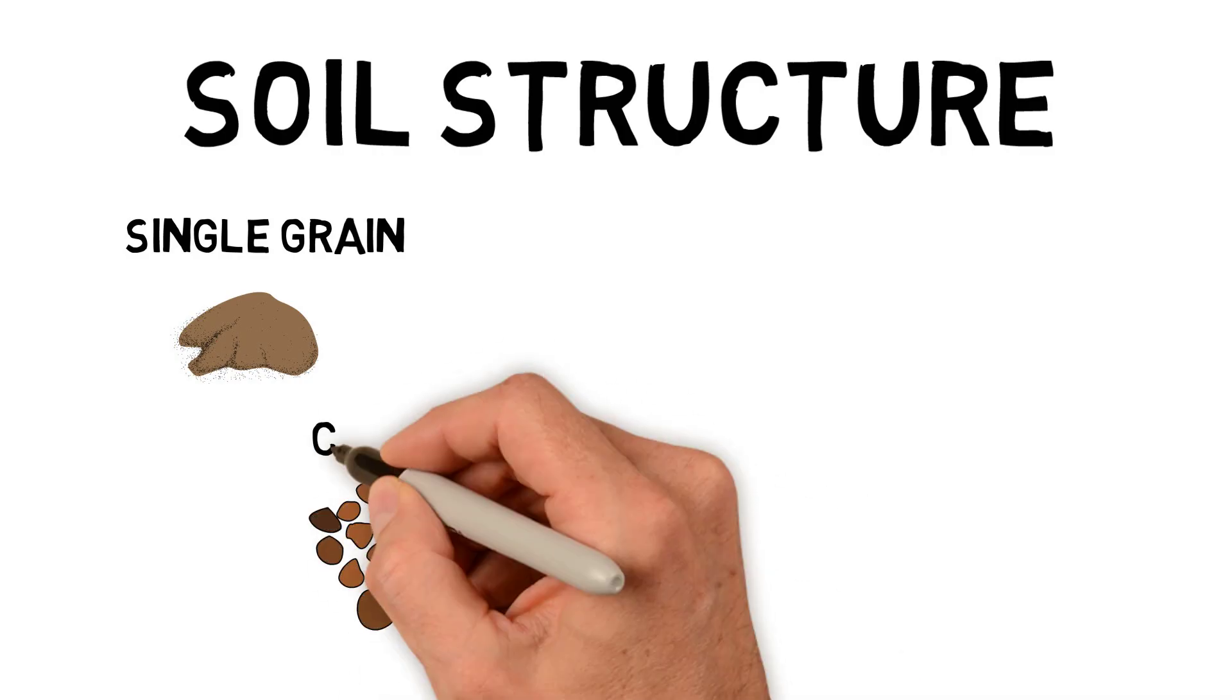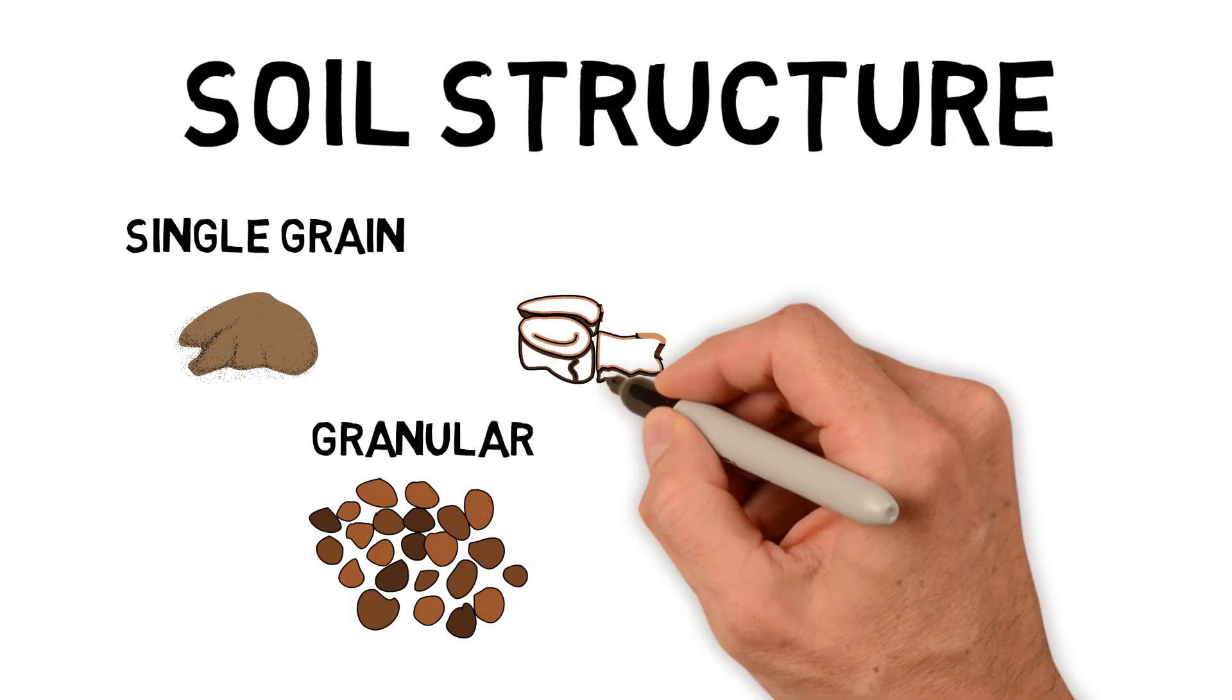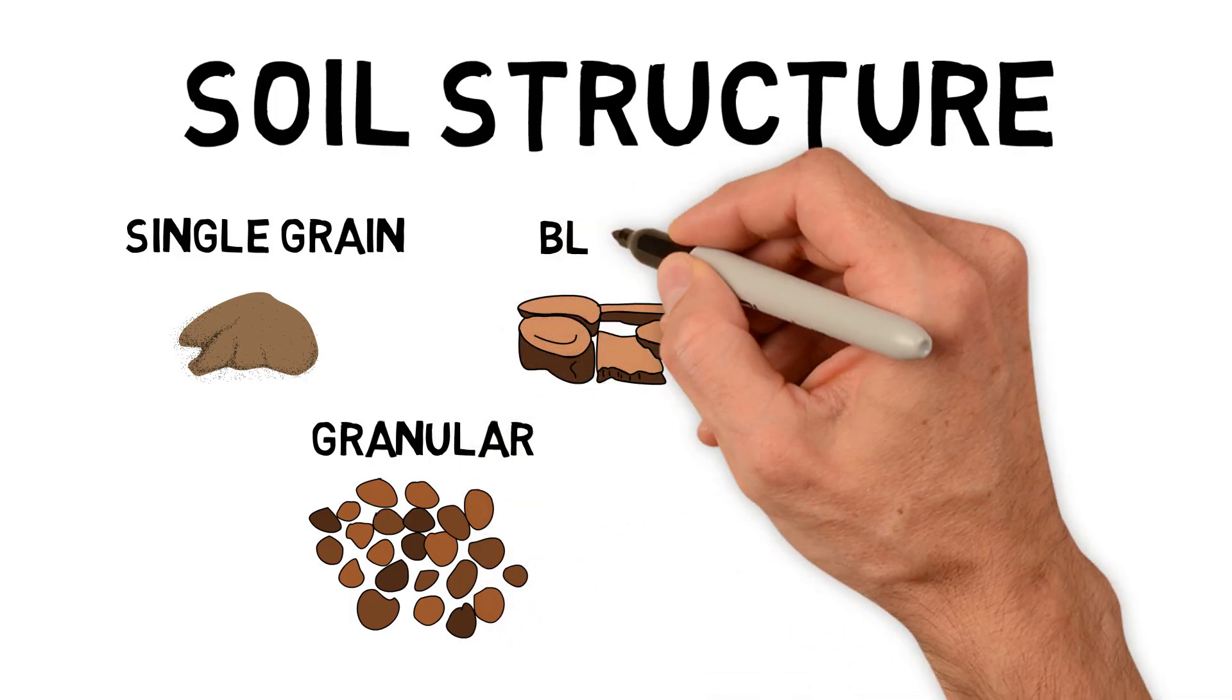Then you can have granular structure, which are small groupings of soil particles. Blocky structure is usually larger. It has bigger cracks in between the aggregates.